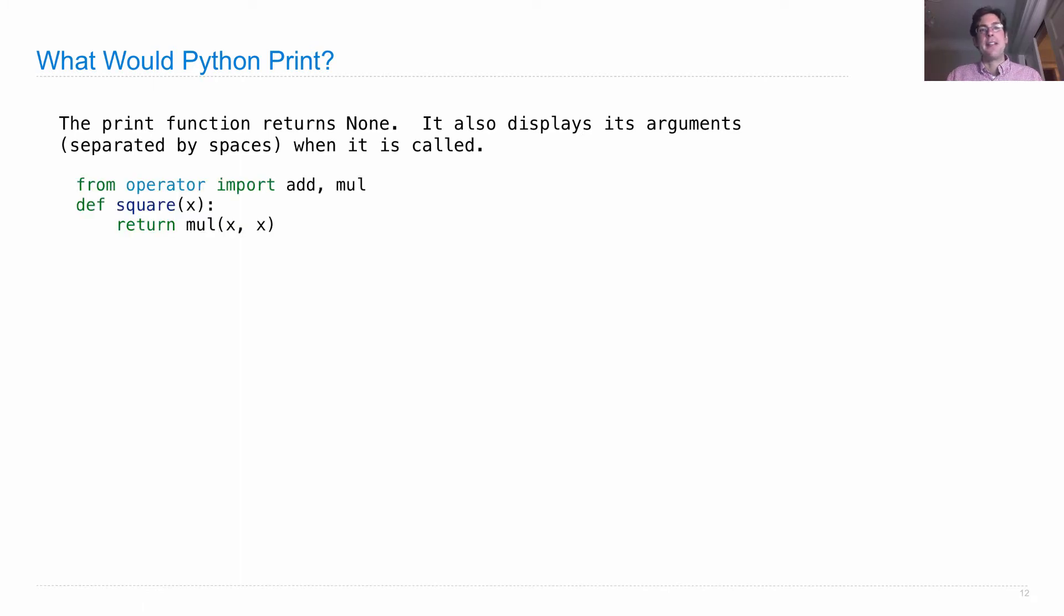Let's assume that we executed this import statement and this def statement. And then we typed in an expression - you figure out what it evaluates to and what it prints as a side effect of being evaluated. If I said the expression is 5, you'd say it evaluates to 5 and nothing is printed. Or, if I asked print(5), it would evaluate to None and, as a consequence of evaluation, it would print 5.